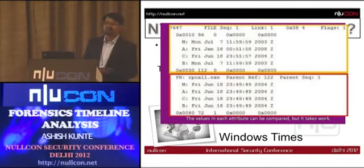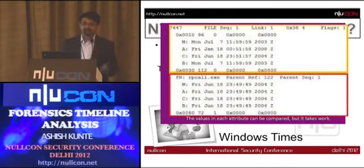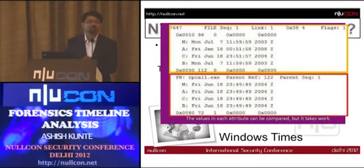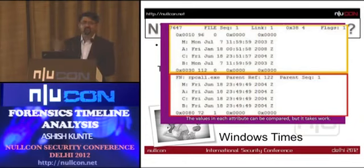In Windows, the master file table has many attributes. You can use a Perl script — mft.pl — written by Harlan Carvey, available publicly. All tools I'm using here are open source — no commercial tools. The mft.pl script takes master file table entries and puts them into a text file.